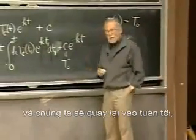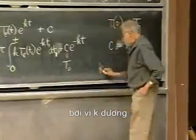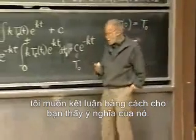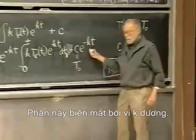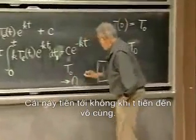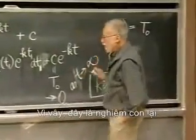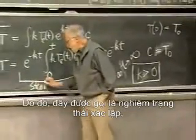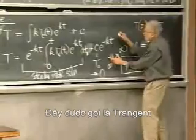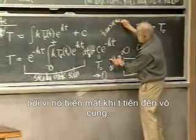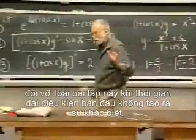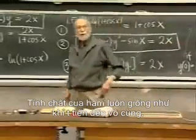Because k is positive — the conductivity is positive, as I emphasized at the beginning of the period — the transient part disappears as T goes to infinity. This part that remains is called the steady-state solution: the behavior the temperature approaches as T goes to infinity. The other part is called the transient because it disappears as T goes to infinity. It depends on the initial condition, but it disappears — which shows that in the long run for this type of problem, the initial condition makes no difference.